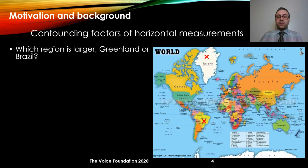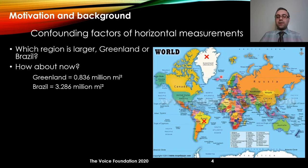Now we want to talk about a different confounding factor. We are provided with a map of the world and asked to determine if Greenland is larger or Brazil. By looking at the image, we would say that Greenland is several times bigger than Brazil. However, when we compare their actual area, we see that Brazil is several times bigger than Greenland.